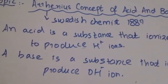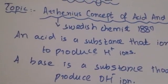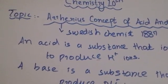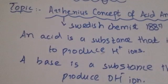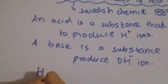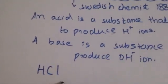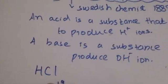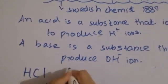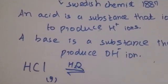Now let's take an example of an acid. HCl — hydrochloric acid — when we dissolve it in H₂O, it ionizes to produce H⁺ ions.